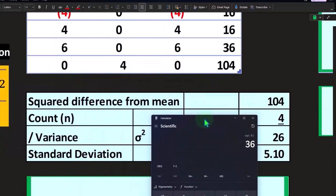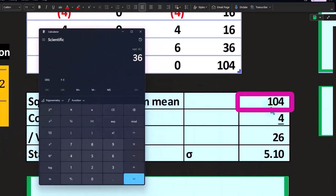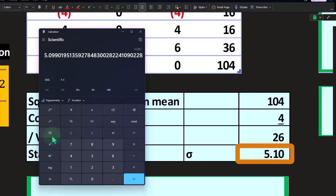We've got 104 divided by four, which gives us our 26. Then I want to take the square root of 26, and that is here. So we get to about 5.09.